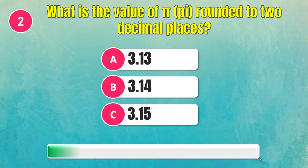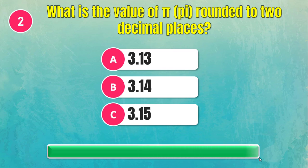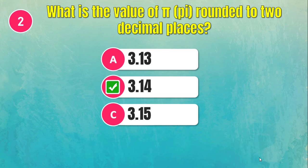What is the value of phi rounded to two decimal places? The answer is 3.14.